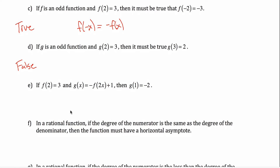Part E — I thought this was a particularly hard question. This is supposed to test your knowledge of function transformations. What's going on here is f of two equals three, so the point (2, 3) is on the graph of f. The x value is two and the y value is three. There's some other function g of x that is similar to f of x, just with these transformations — there's a negative, a two, and a plus one.